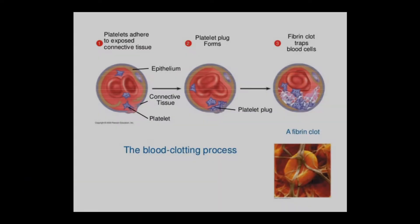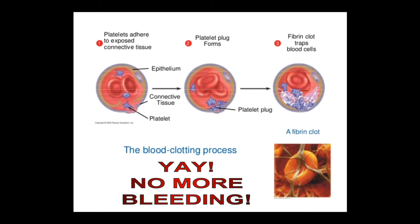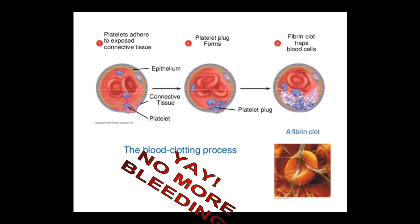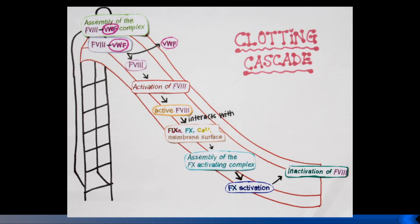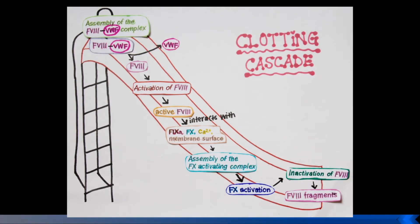Next, clotting Factor VIII causes a strong platelet plug to form over which a stable fibrin clot forms and seals off the injury. No longer protected by von Willebrand factor, activated Factor VIII is inactivated, most prominently by activated protein C and Factor IXA via enzymatic degradation and spontaneous subunit dissociation.